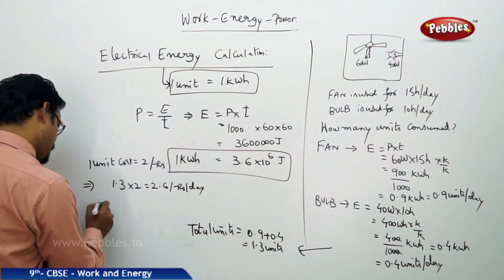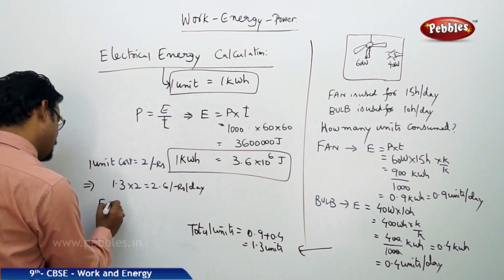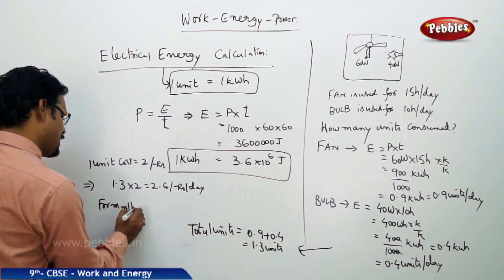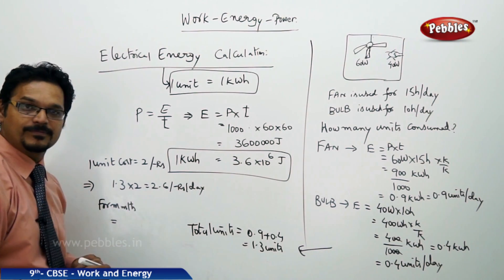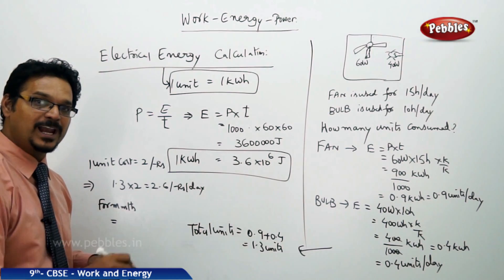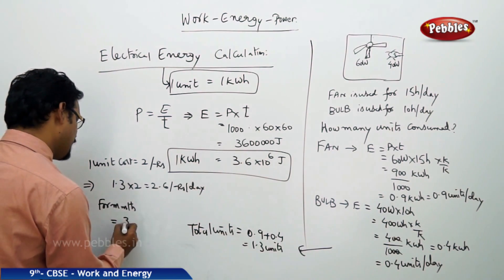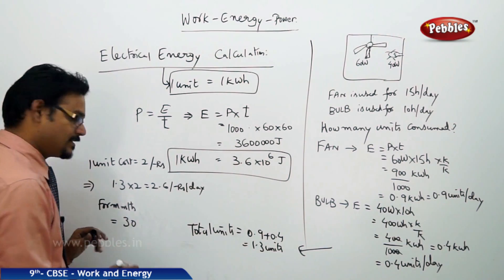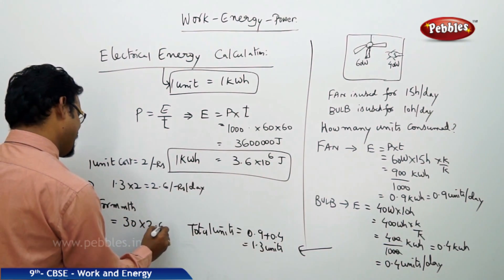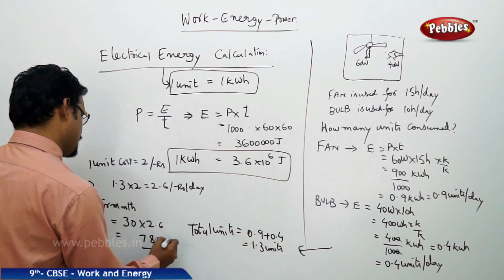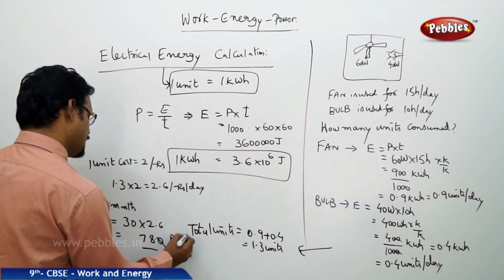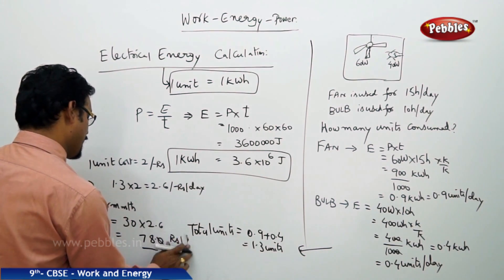Per month, if it is per month, then how much he needs to pay? You know that. Stop this video and do the calculation, play again and check the answer. So for month we take 30 days into 2.6. So how much this is, 1817, so it is nothing but 78 rupees per month.